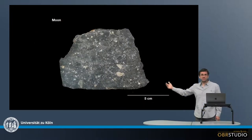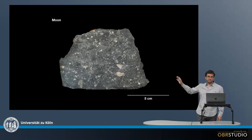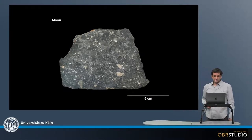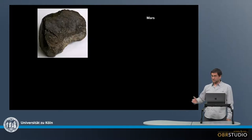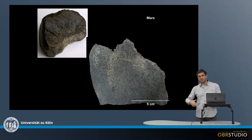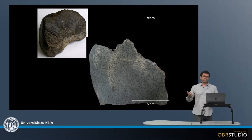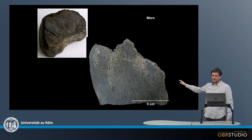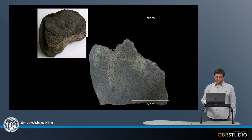Then there are also meteorites from the moon. This is a breccia that is from the moon. This is a piece of mass from the outside and this is how it looks from the inside. Of course Moon and Mars both come from differentiated parent bodies, so this has quite a magmatic structure here.